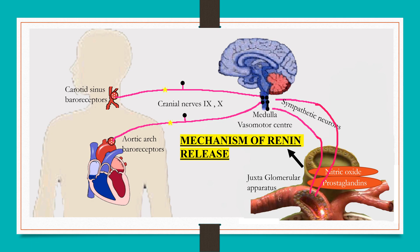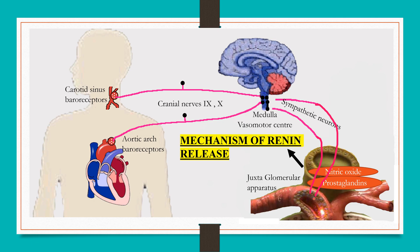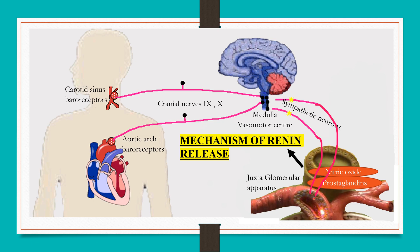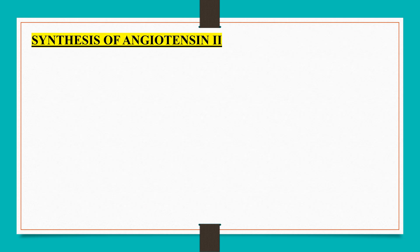Mechanism of renin release through juxtaglomerular cells: these cells also detect falling blood pressure through stretch receptors and release renin into the circulation. Angiotensin 2 may be synthesized from the circulating renin-angiotensin-aldosterone system or the tissue renin-angiotensin-aldosterone system.